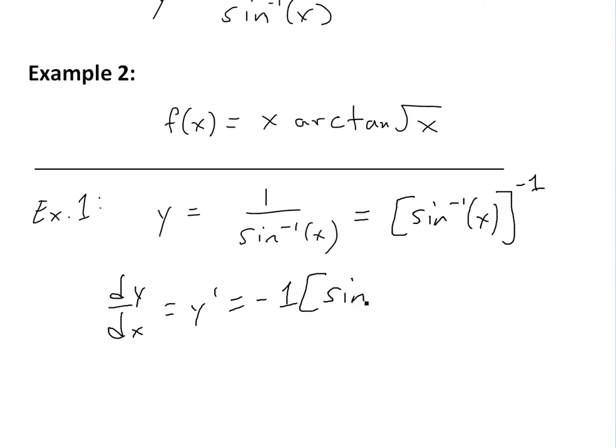And then we write down inverse sine of x to the power, then we subtract by 1, so negative 2. And now we just multiply by derivative of the inside function. And derivative of inverse sine of x is just 1 divided by square root 1 minus x squared right here.